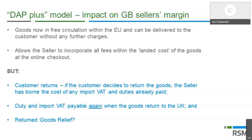From a customer's perspective, the shipper knocks on the door requiring payment of import VAT and duty if applicable. The DAP plus model also allows sellers to incorporate all fees within the landed costs at the online checkout, so the customer knows exactly what they are paying — which is a reason it has been adopted by many UK businesses. However, it has challenges around returns: if a customer returns goods it is virtually impossible for the seller to reclaim the EU VAT and duty because the customer was named as the importer. UK VAT and duty may also be payable on re-import, though returned goods relief may alleviate some costs.